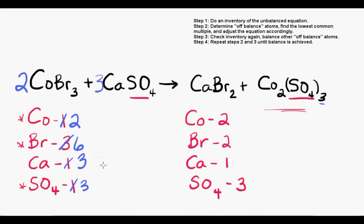Now, it looks to me like the easiest fix would be to balance calcium, and I always tend towards the easiest fix, as opposed to trying to balance bromide, which has 6 on the left and 2 on the right. So we can simply fix calcium by putting a coefficient of 3 in front of the calcium on the right.